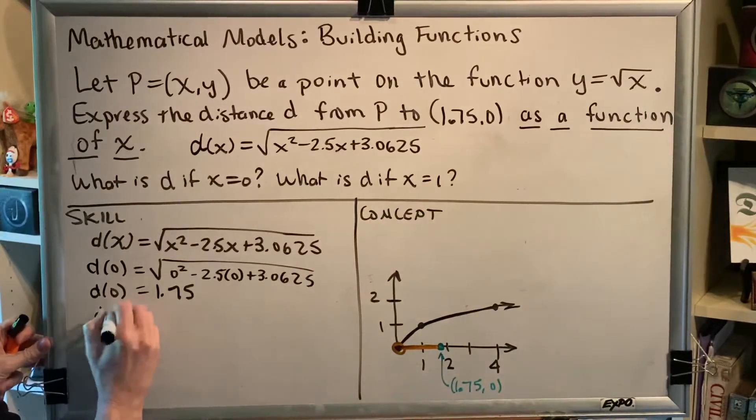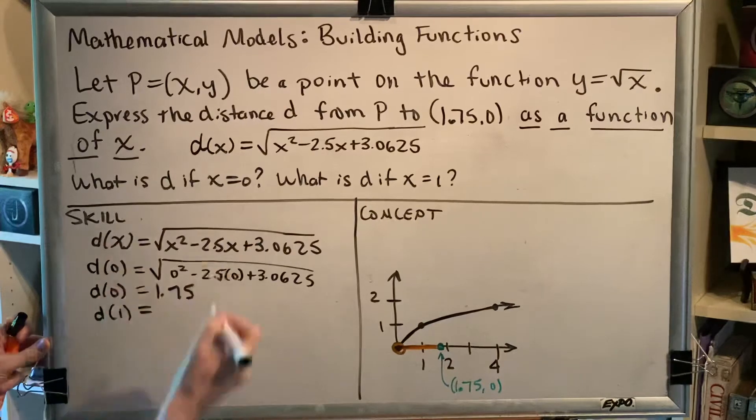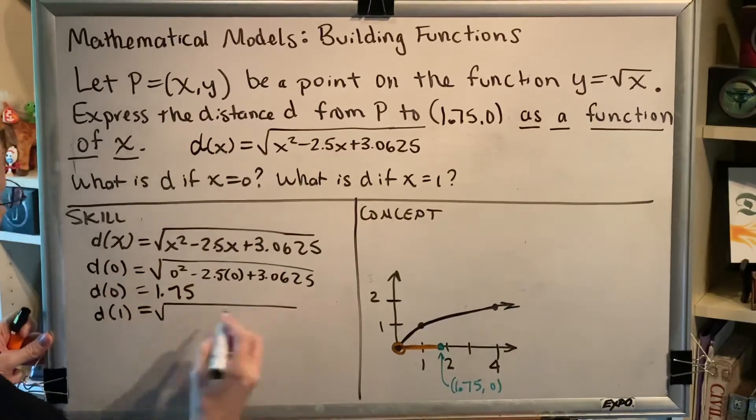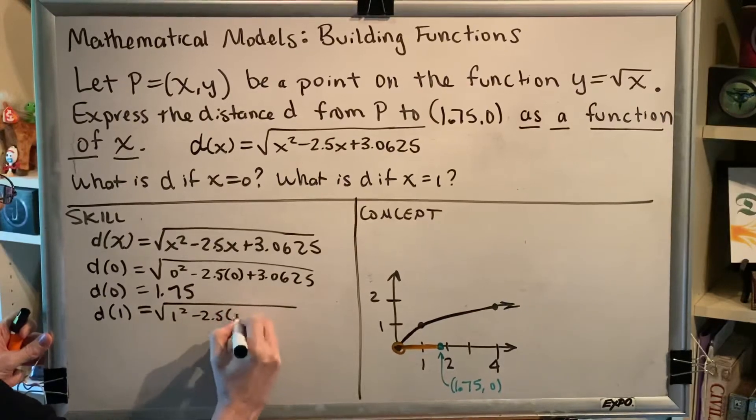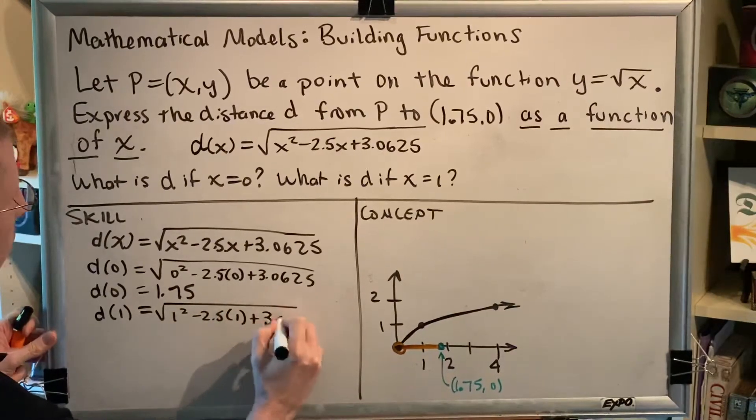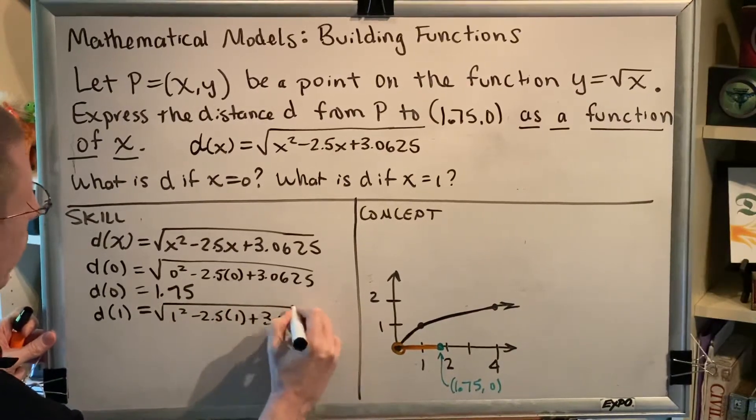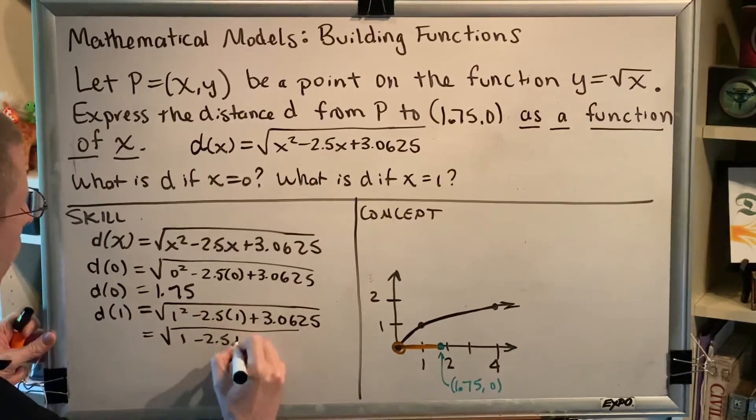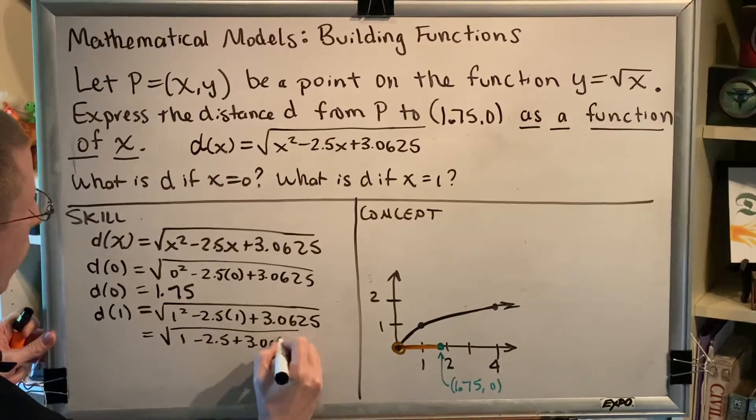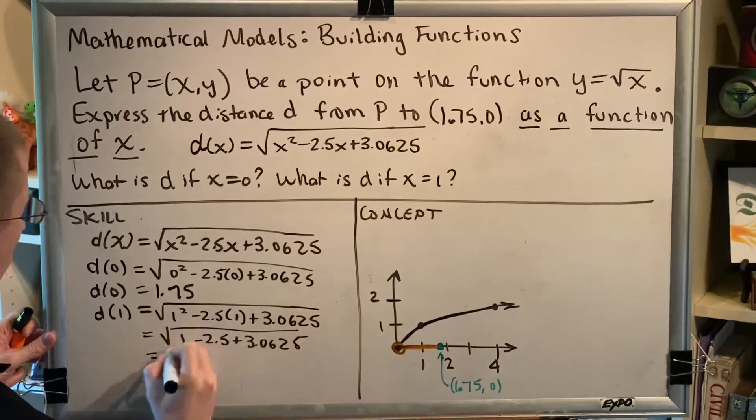So similar idea, but instead of replacing all the x's with 0, we're going to replace all the x's with 1. So we'll have 1 squared minus 2.5 times 1 plus 3.0625. So this is going to give us 1 minus 2.5 plus 3.0625, then take the square root.